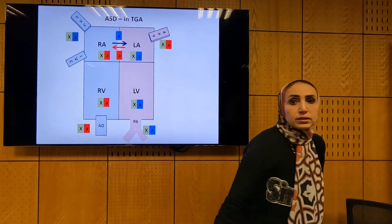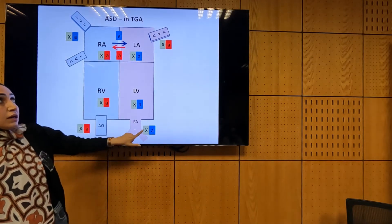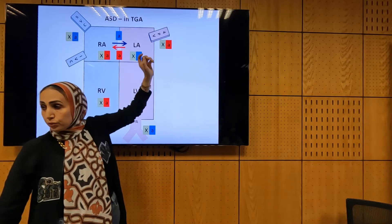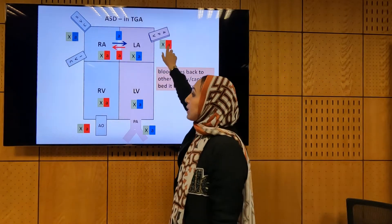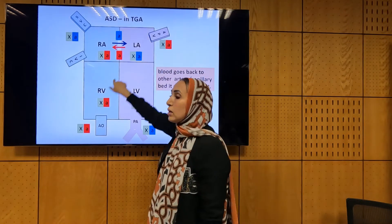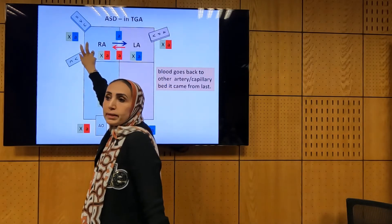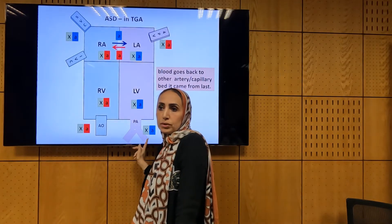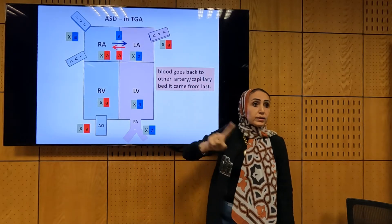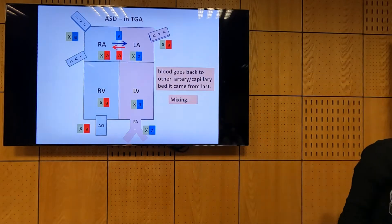This deoxygenated blood crosses back across the ASD to the left atrium, left ventricle, aorta, then back to the pulmonary, then back to the pulmonary veins. This amount went from the pulmonary veins to the aorta — a different circulation. And the amount from the cava went to the pulmonary — also a different circulation. So the blood is crossing between both circulations. We call this mixing — more precisely, intracirculatory mixing.